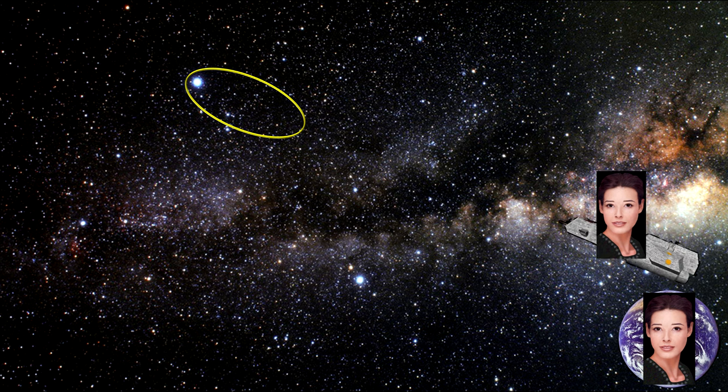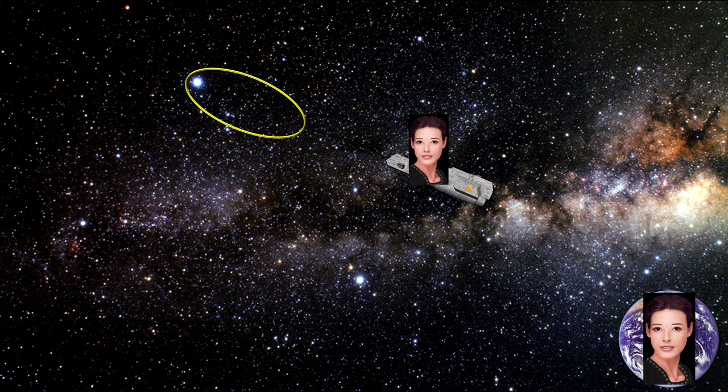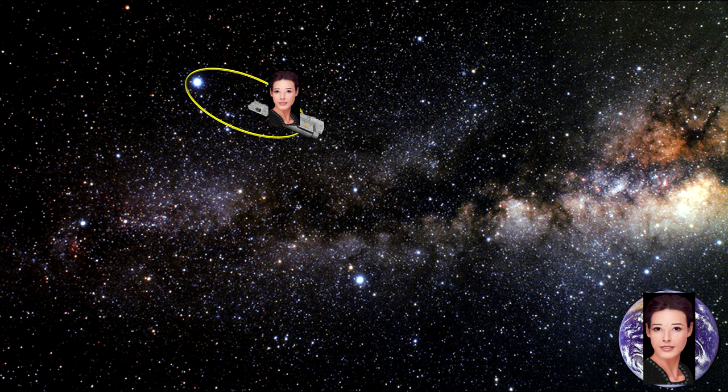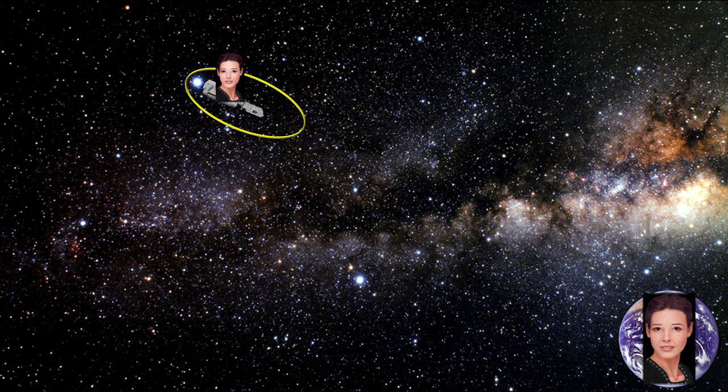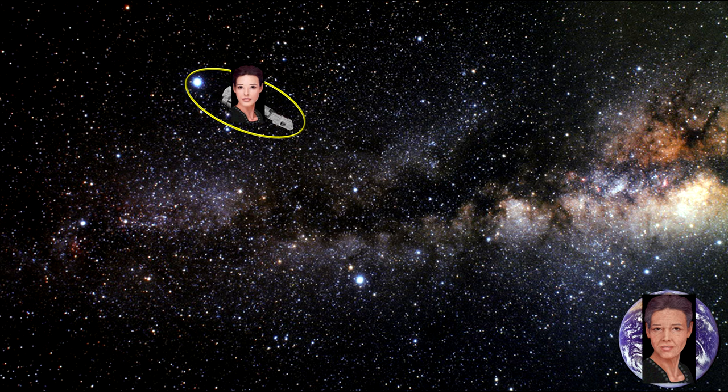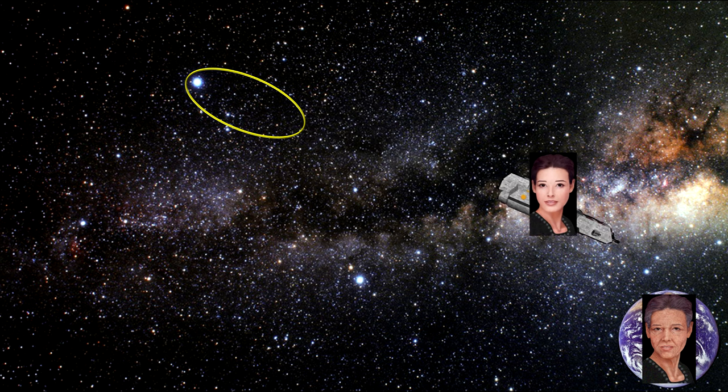But there is at least one point where the twin in the rocket is not in an inertial reference frame. As the spaceship approaches Vega, it decelerates to a stop and then re-accelerates back to Earth. The traveling twin finds that she is in a gravitational field and gravitational time dilation needs to be taken into account.